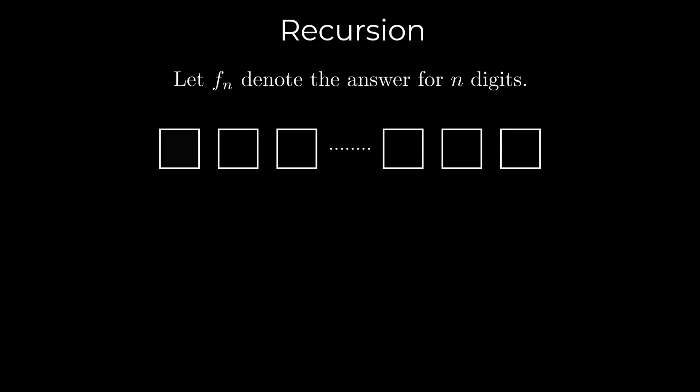We will use recursion to solve this problem. First, let's count how many numbers have no adjacent ones. Let fn denote the answer for n digits. Suppose we choose the first digit to be anything other than 1.